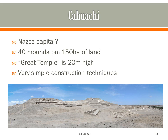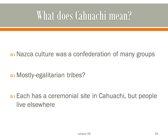Kahuachi seems like a good candidate for a capital: forty large mounds scattered across about 150 hectares of land, with the largest — called the Great Temple — standing 20 meters high. However, the mounds are all constructed simply by piling up trash and dirt on low natural hills and enclosing everything in an adobe wall, and the site appears not to have had much of a resident population. A better explanation is that the Nazca people were a loose confederation of mostly egalitarian tribes, each with its own mound at Kahuachi for ritual purposes, while most of the population lived dispersed in smaller farming villages.